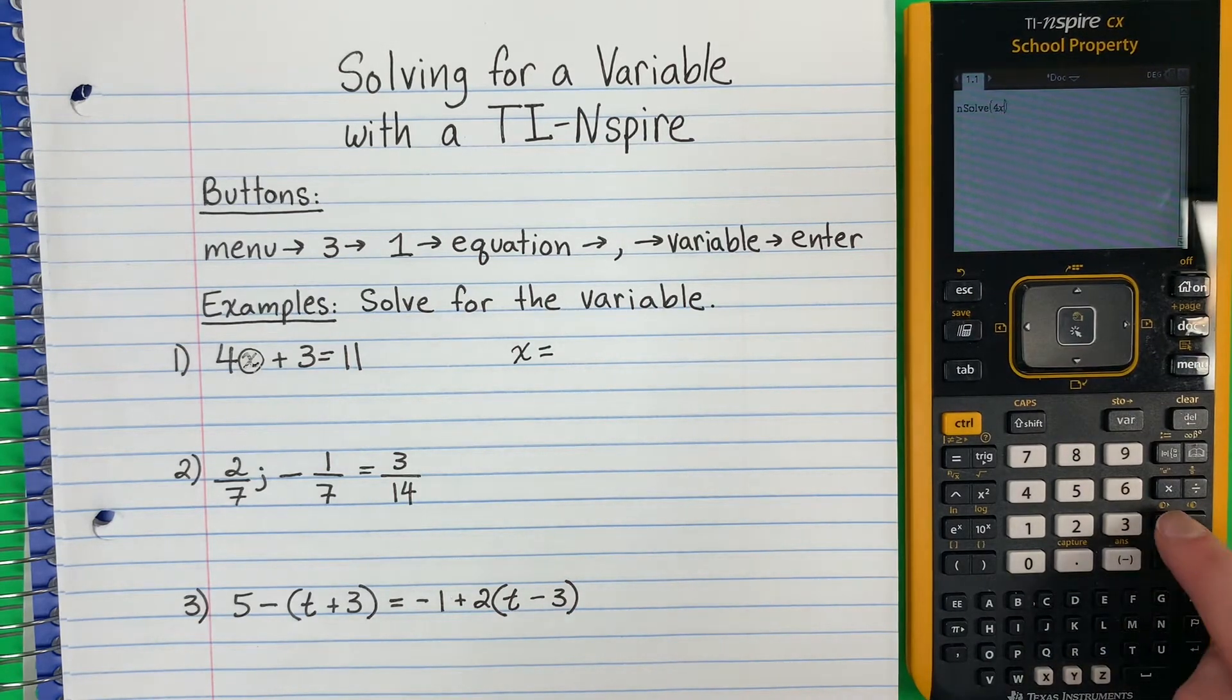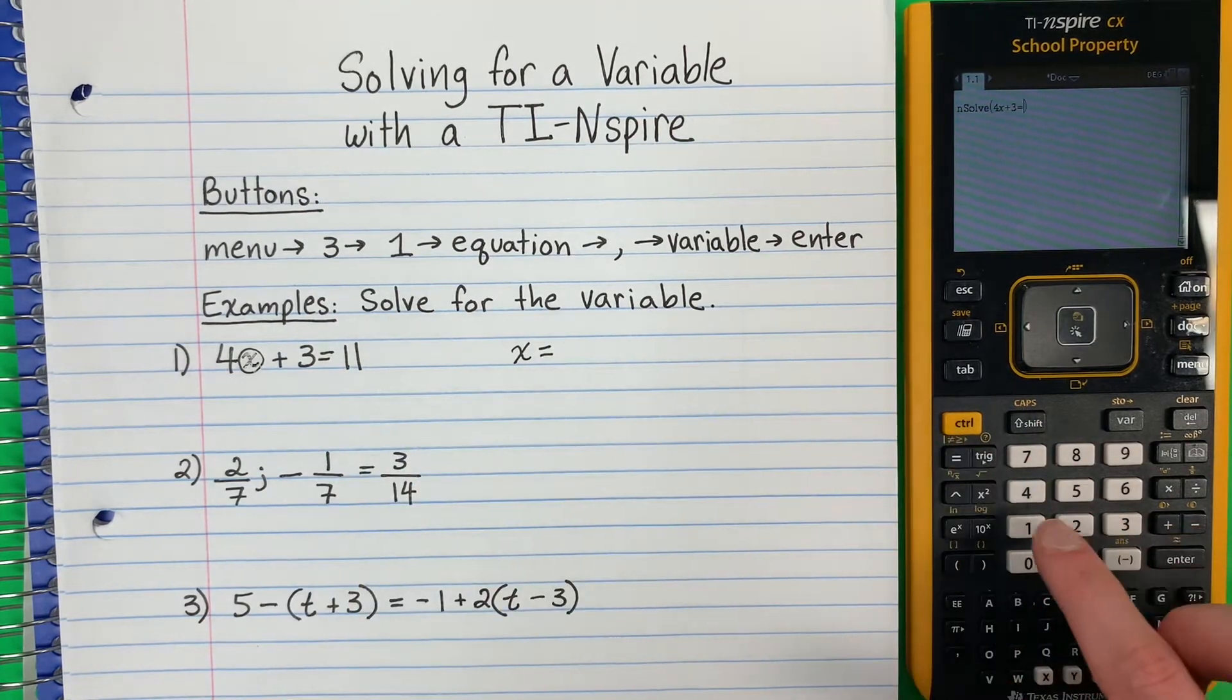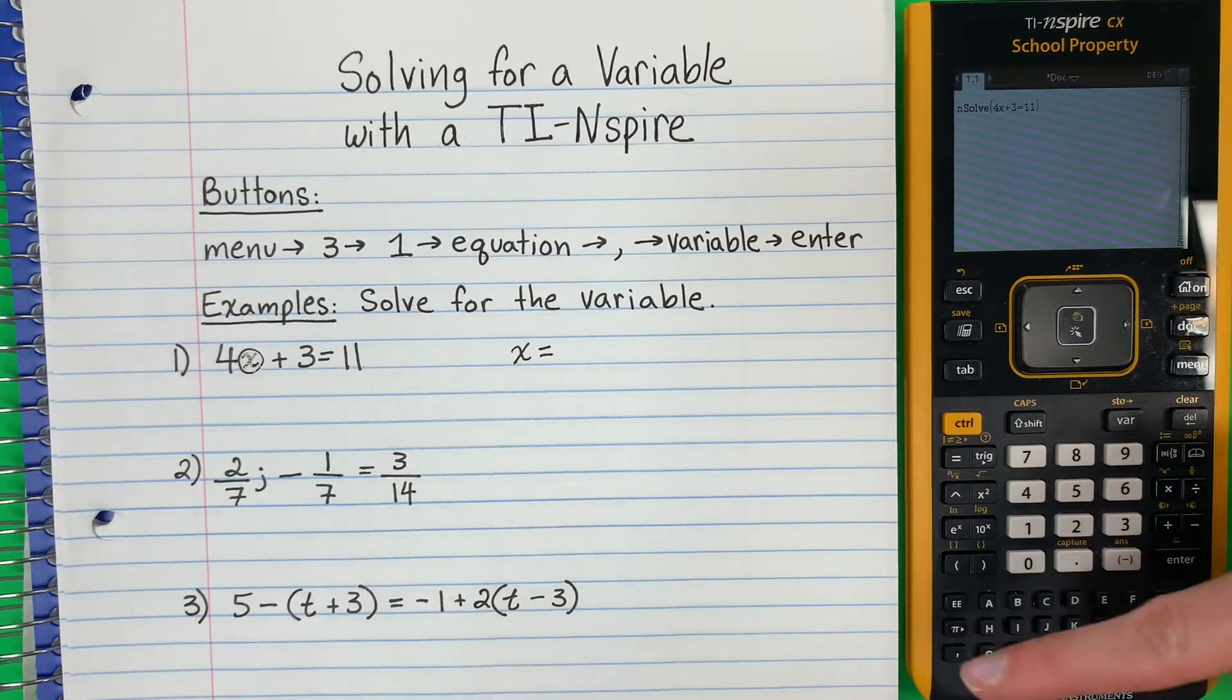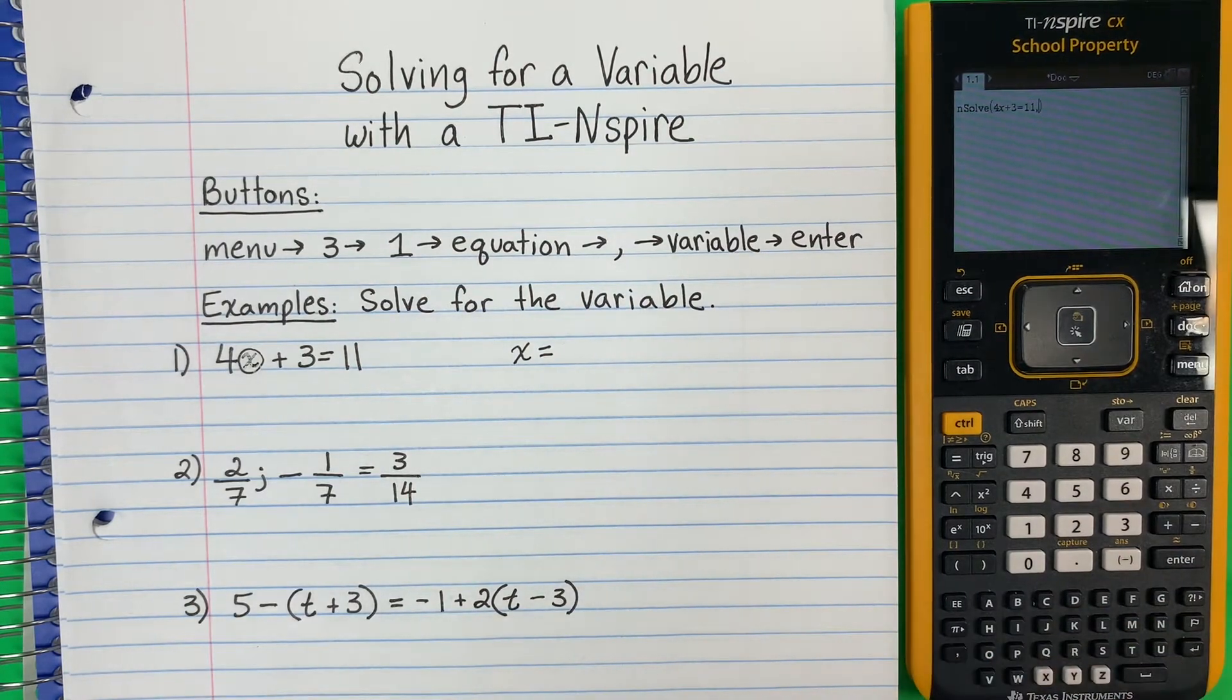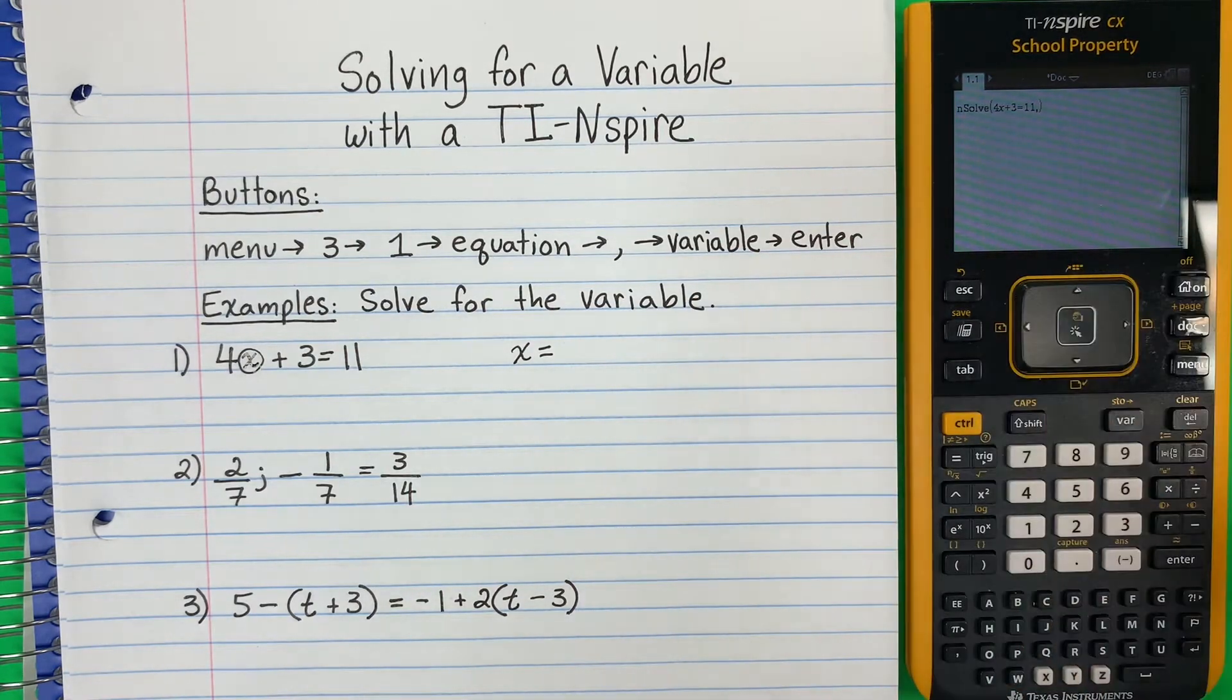X plus 3 equals 11. Okay, after you need to put a comma. Here's the comma right here. And then you have to put the letter. La letra. So the letter or the variable is X. So I'm going to put X again.